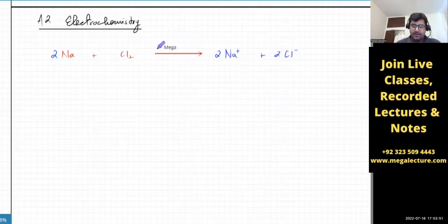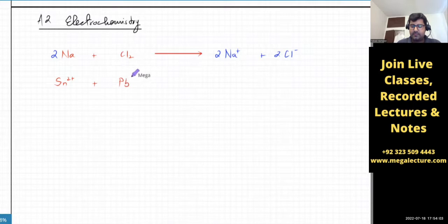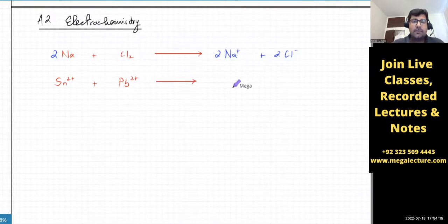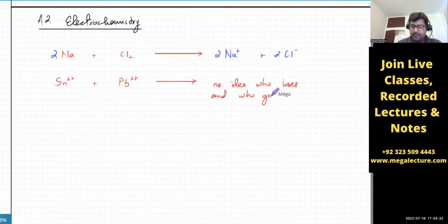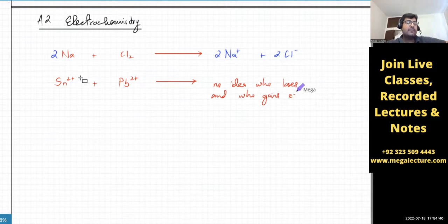But what if you had some other substance — let's say Sn2+ and Pb2+? Who's going to lose electrons? Who's going to gain electrons? You have no idea who loses electrons and who gains electrons. Will Sn2+ turn into Sn4+ or turn into Sn? Will it get reduced or oxidized? No idea at the moment.